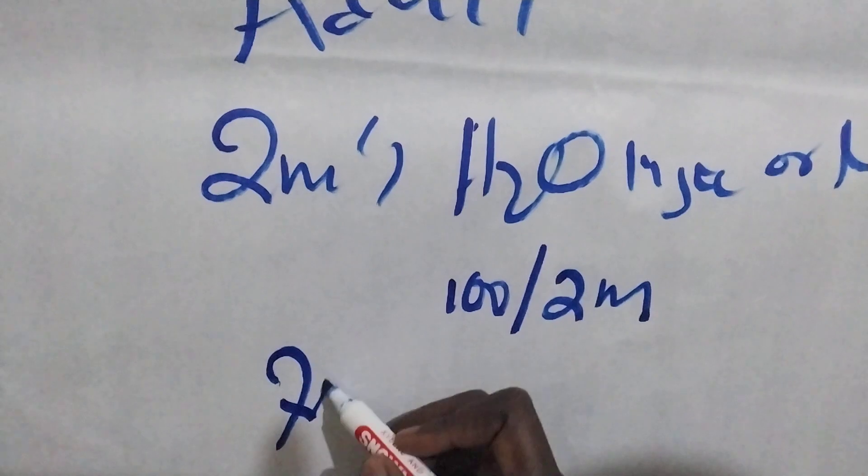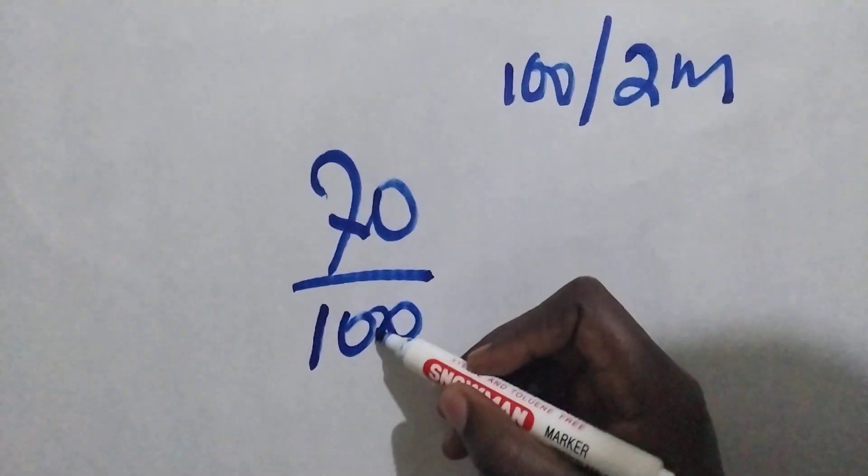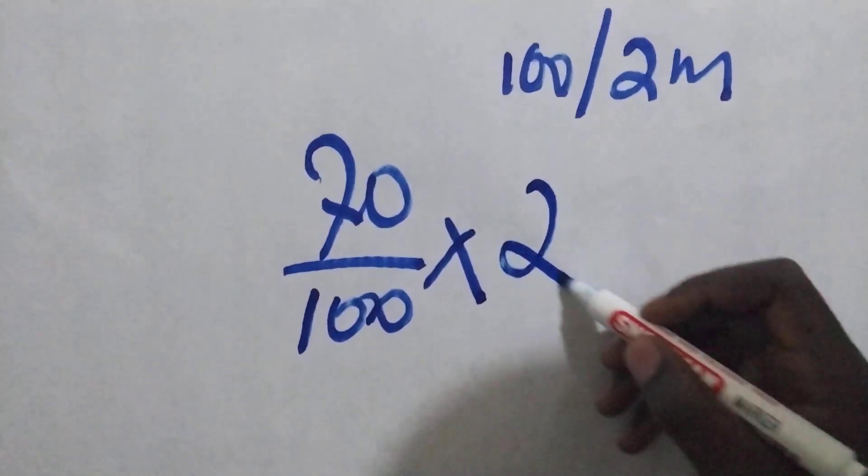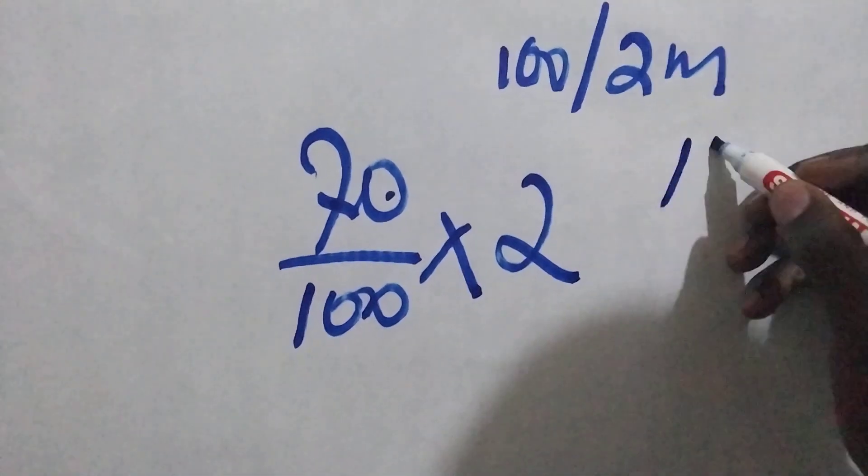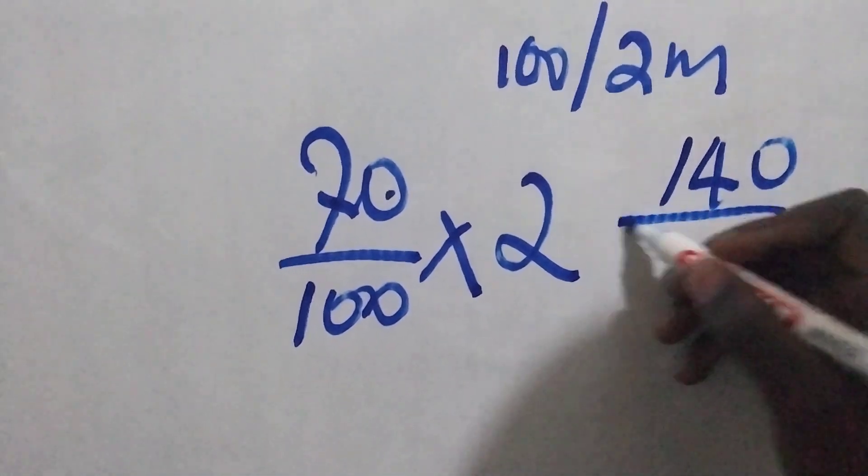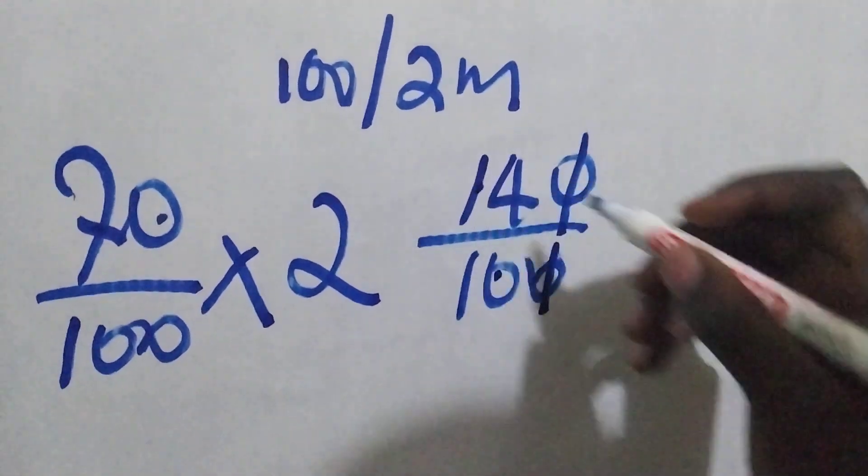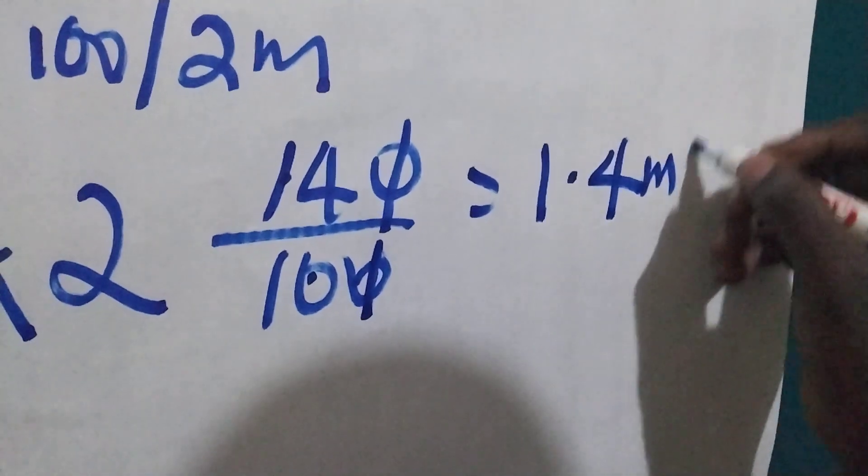So the prescribed amount is 70 divided by 100 times 2. So this one divided by, times this one is 140 divided by 100. So this one cancels this. This equals 1.4ml.